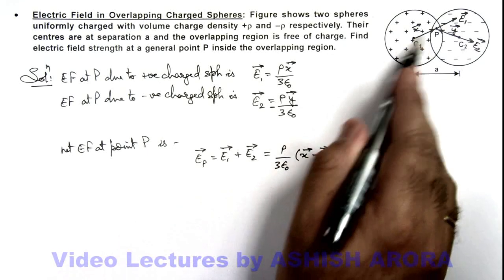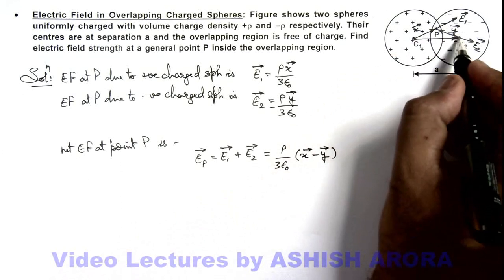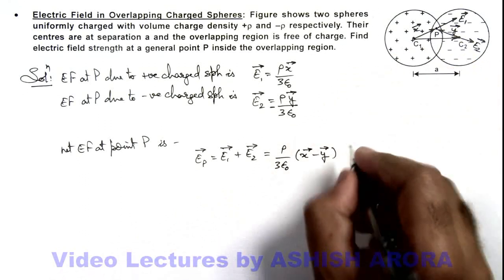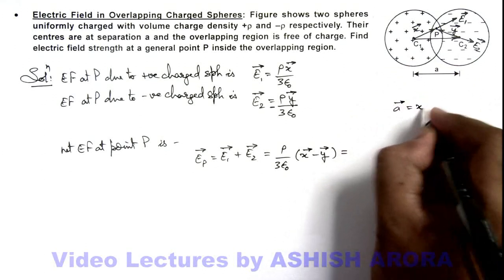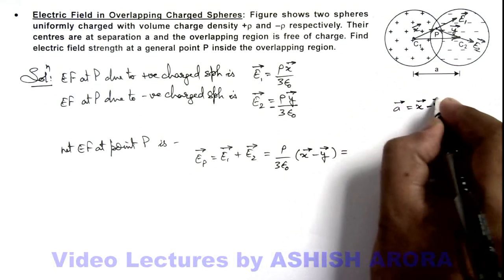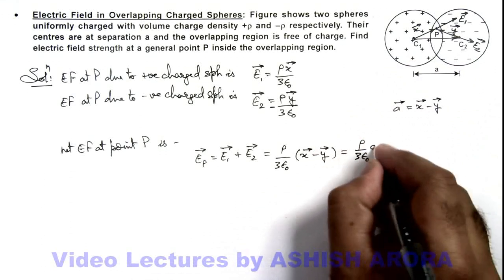So here x vector minus y vector will be this vector which is a position vector of center of second sphere with respect to the first sphere. So here I can also write this as a vector which is equal to x vector minus y vector. So this is ρ by 3ε₀ multiplied by a vector.